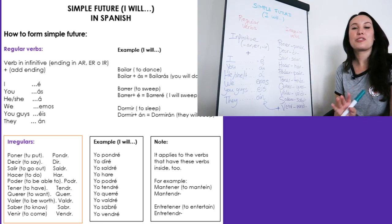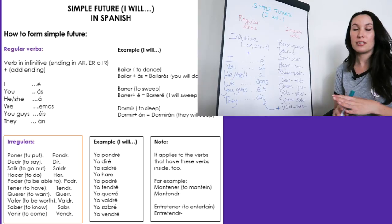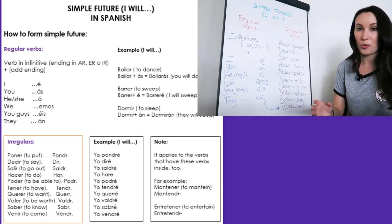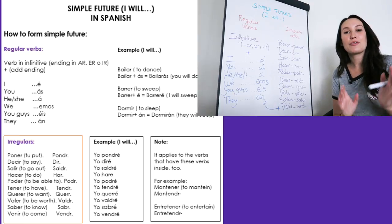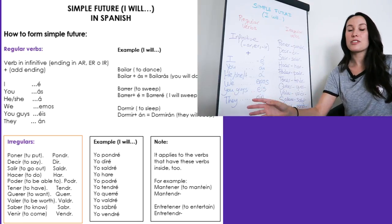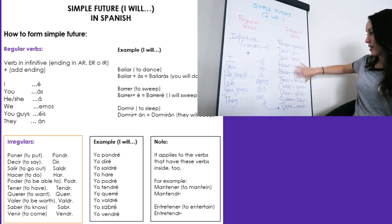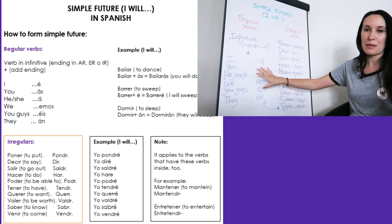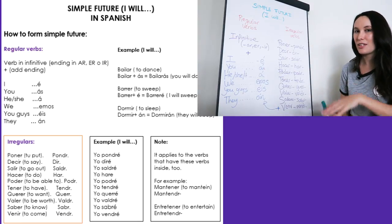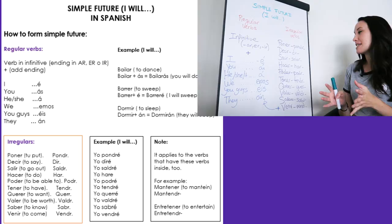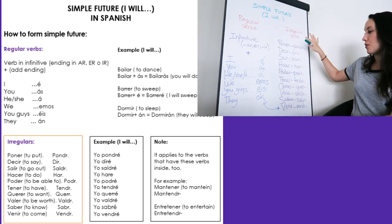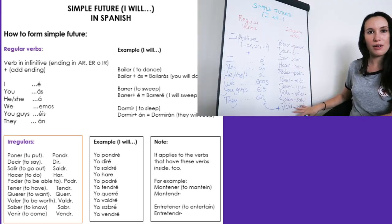Now I'm showing a grid that you're going to be able to download later. I'm going to link below in the description box, as always. And in there you have the regular verbs, the endings, examples, you have the irregular verb with the irregular form, we use the same endings, examples as well, and a little note. So use that for your practice. In that grid you also have the meanings for each of these irregular verbs.